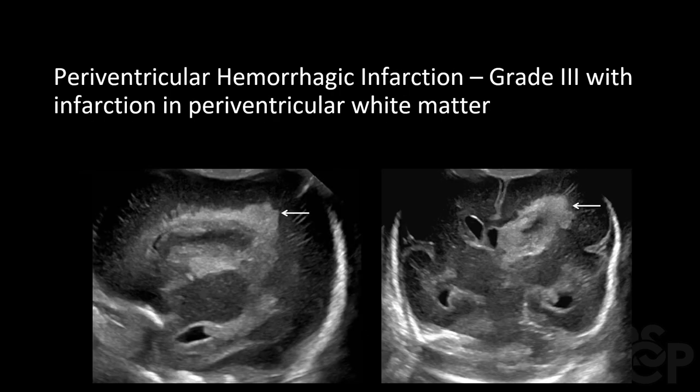What was previously known as grade 4 is now known as periventricular hemorrhagic infarction, or PVHI. This is defined as grade 3 with infarction into the periventricular white matter. In the sagittal view on the left, the arrow clearly shows the infarction extending into white matter, also visible in the coronal view on the right. It was originally thought to be an extension of ventricular hemorrhage, but is now understood to be secondary to venous infarction caused by compression of deep terminal veins by the expanded blood-filled ventricle.